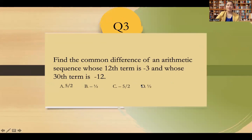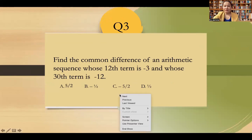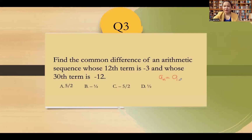Next: find the common difference of an arithmetic sequence whose 12th term is -3 and the 30th term is -12. Using the general formula a_n = a1 + (n-1)d, we form two equations. Equation 1: -3 = a1 + 11d (since it's the 12th term). Equation 2: -12 = a1 + 29d (since it's the 30th term).